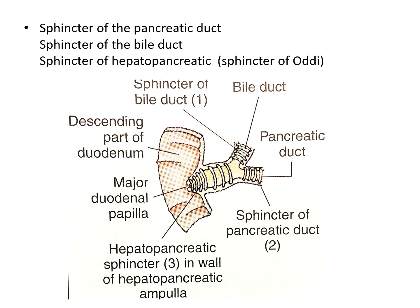The sphincter of the pancreatic duct surrounds the terminal part of the pancreatic duct. The sphincter of the bile duct, or the choledochal sphincter, surrounds the termination of the bile duct. And the hepatopancreatic sphincter, called the sphincter of Oddi, surrounds the hepatopancreatic ampulla. These are small muscle sphincters that control the flow of bile and pancreatic juice into the duodenum. The accessory pancreatic duct drains the uncinate process and the inferior part of the head and opens into the duodenum at the minor duodenal papilla.